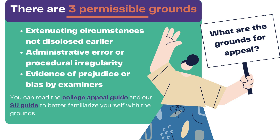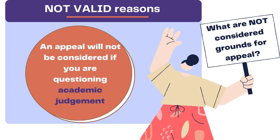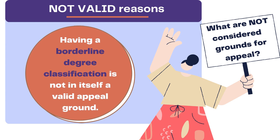You must meet one or more of the three grounds to appeal formally. We therefore recommend you read the College Academic Appeal Guide and our SU Online Guide to better familiarise yourself with these grounds. It is important to remember that an appeal will not be considered valid if you are questioning academic judgment — for example, if you simply disagree with the mark you are given. Having a borderline degree classification is not in itself a valid ground of appeal either; you would still need at least one of the three grounds to be present.